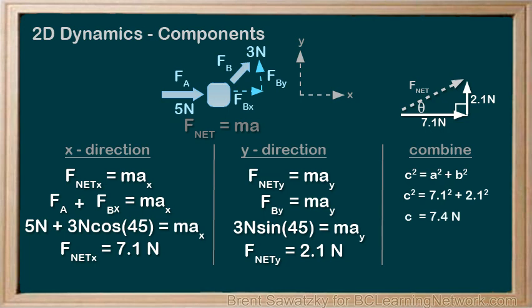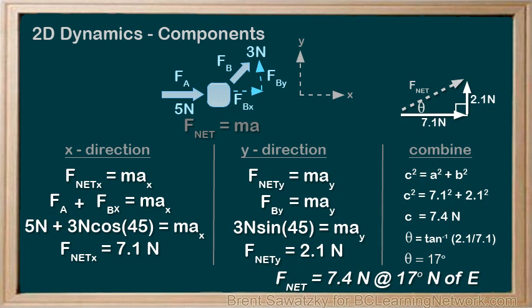For the direction of F net, we can use our tan ratio, and we see that theta equals 17 degrees, which also exactly matches our previous result. Again, arriving at a final answer of F net equals 7.4 newtons at 17 degrees north of east.